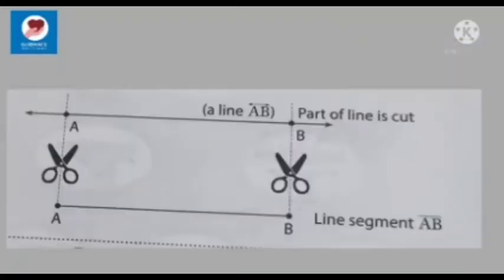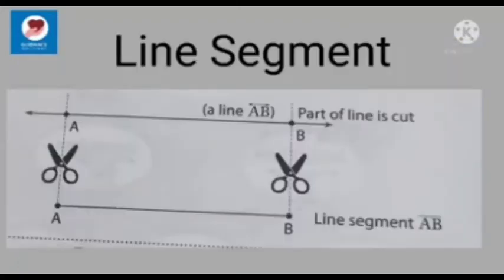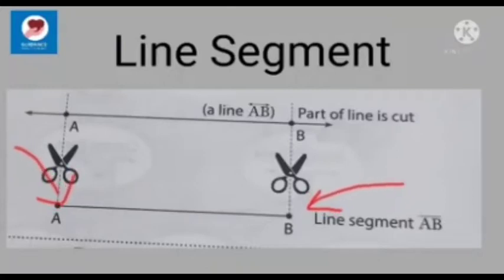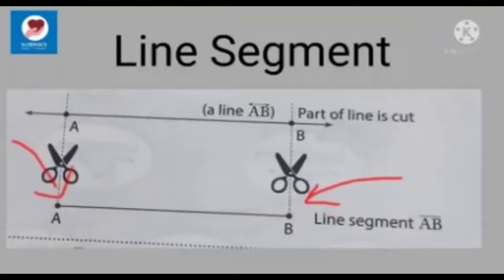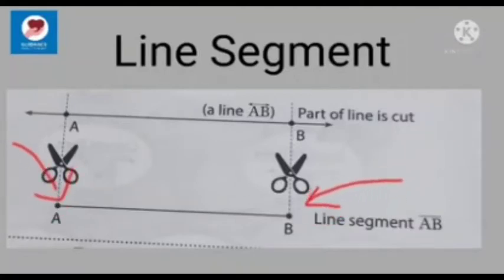The part of a line is called a line segment. It has two endpoints and a definite length. Look at this picture — these are examples of line segments.